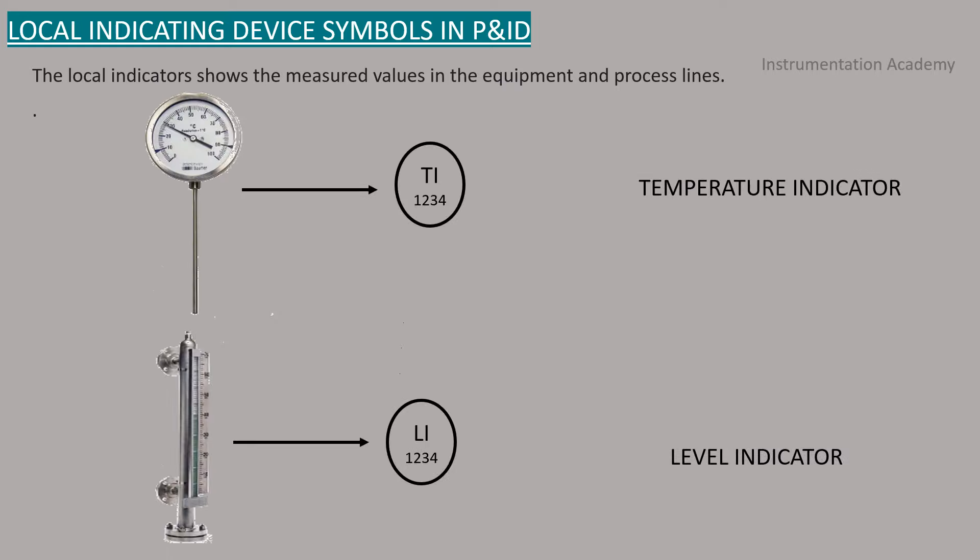Local indicating device symbols in P&ID. Local indicators show the measured value in the equipment and process lines. This figure shows how primary indicating devices are shown in a P&ID.